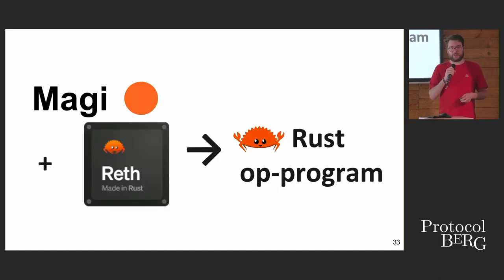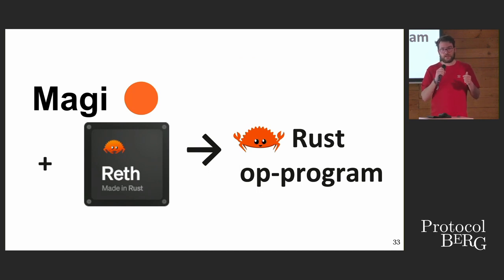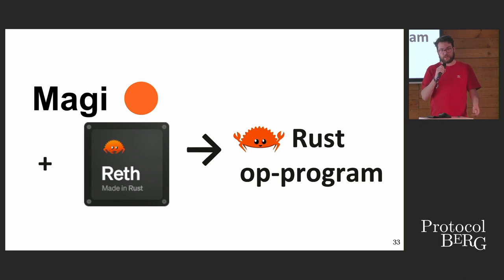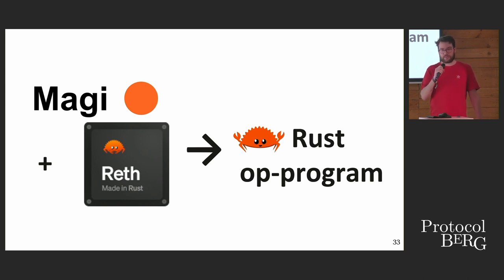We can have a Rust version too. We have Magi — an alternative to the OP node, a layer two consensus layer client for the OP stack. We have OP-Reth, now in development — an Optimism version. You can combine them into an OP program. This is a very new project, barely off the ground, but it expresses how we can create this diversity and have optionality in proofing.